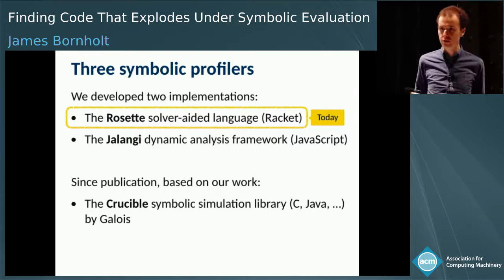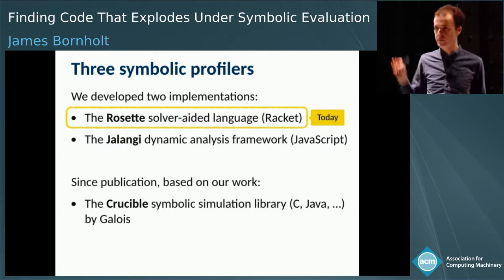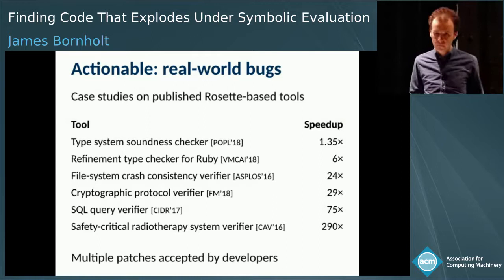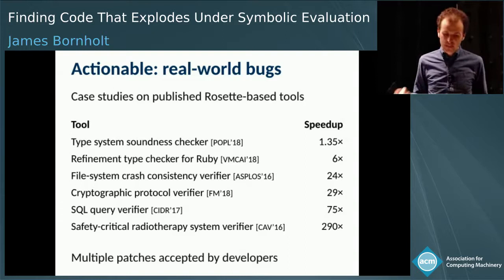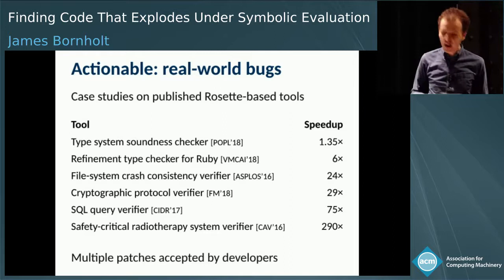For the purpose of time, I'll focus on the Rosette implementation. First, I want to show you that we can find real bugs. We gathered a large number of published tools based on Rosette, ran the profiler on all of them, and looked for bugs. We were able to find a total of eight bugs — showing six here — in these published tools. We achieved speedups ranging from about 35% up to 290 times faster. Many of our patches to these tools were accepted by the developers.